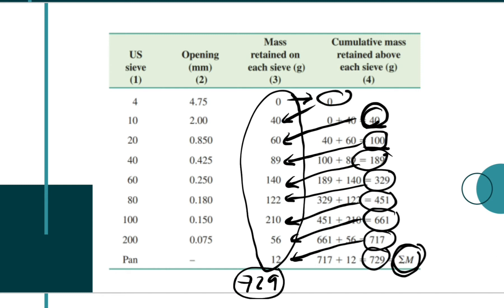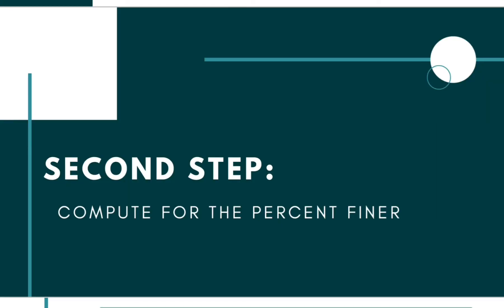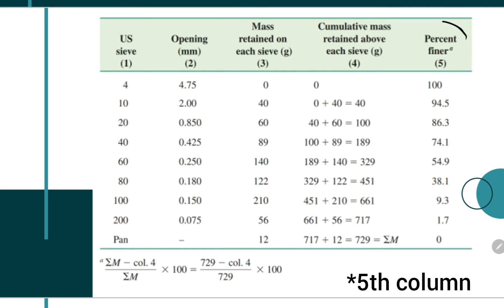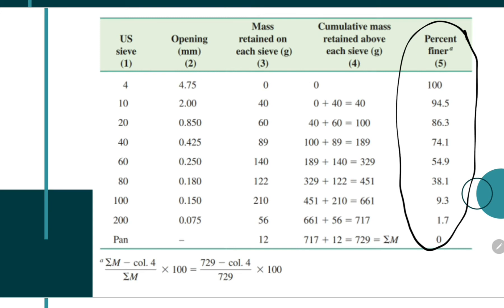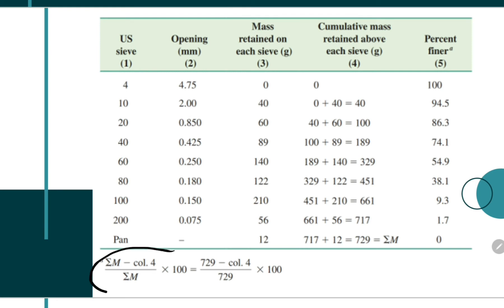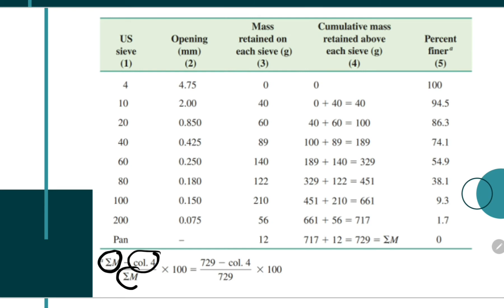Why did we compute for the total mass? That's our next step. You add another column — the fourth column is intended for the percent finer. In order to solve for the percent finer, we need to follow a certain formula. The formula is quite simple: to get the percent finer, you simply subtract from the sigma m (total mass) the value of the cumulative mass, all over the total mass, times 100%.